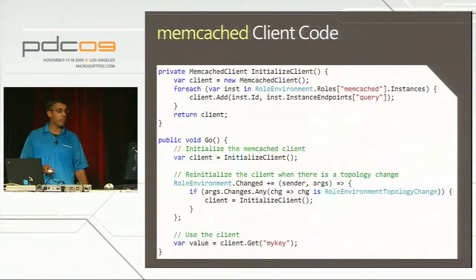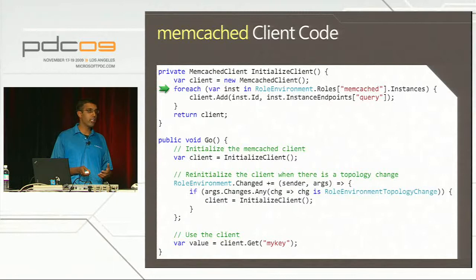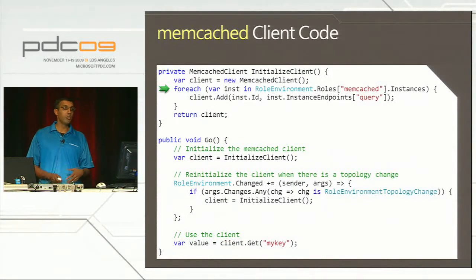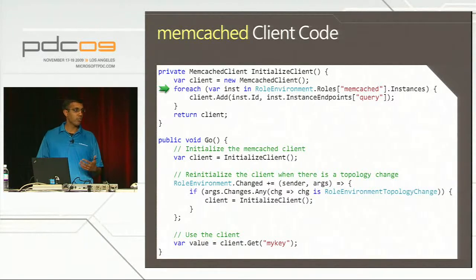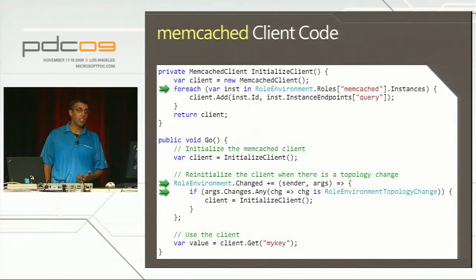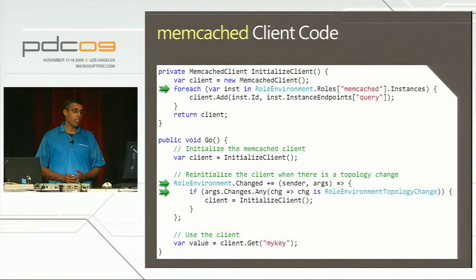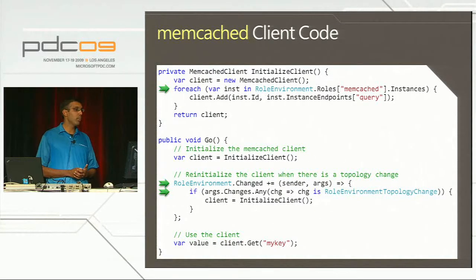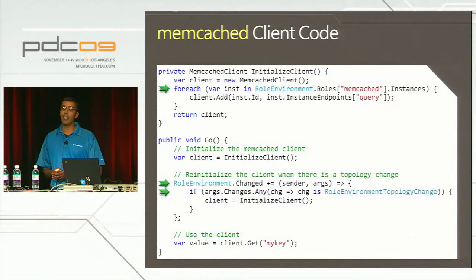For when a new Memcached instance comes up or goes down, we've introduced a new event called role environment.changed, which tells you when there's a change to the topology of your deployment. When I get this event, I can check if it's a topology change and just reinitialize my client - really only two lines of code to do what sounds like a complicated thing. After that, I can use my Memcached client in exactly the same way as outside Windows Azure - simply making client.get or client.set calls.